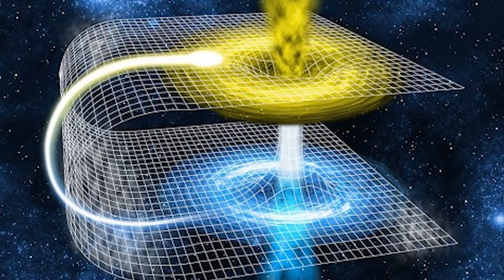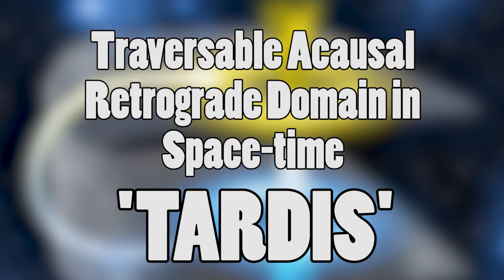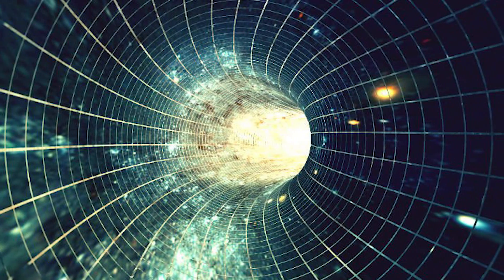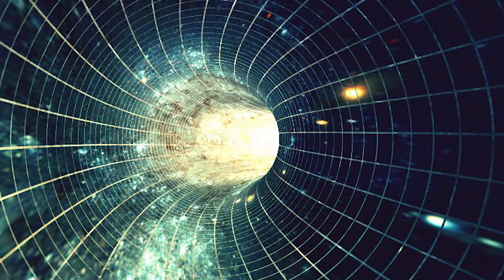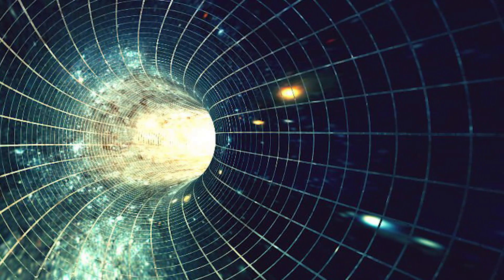In this study, Tippett showcased his mathematical model called the Traversible Acausal Retrograde Domain in Space-Time, or TARDIS. His model basically showcases a bubble of space-time geometry that moves eight times faster than the speed of light, allowing it to move backwards in time.